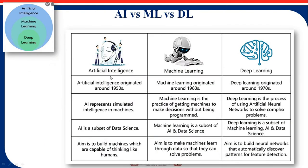This is the difference between artificial intelligence, machine learning, and deep learning. Artificial intelligence originated around 1950, machine learning around 1960, and deep learning around 1970. Deep learning is a subset of machine learning, and machine learning is a subset of artificial intelligence. Artificial intelligence builds machines capable of thinking like humans. Machine learning learns from data and previous problems to solve new ones, thereby generating intelligent systems. Deep learning uses neural networks and automatically discovers patterns and features.